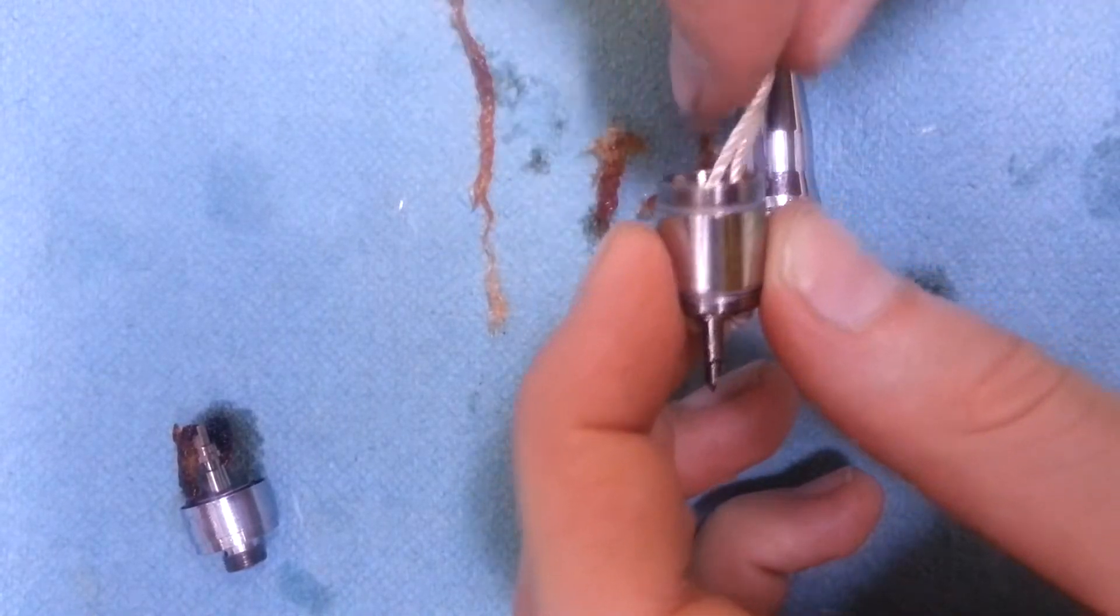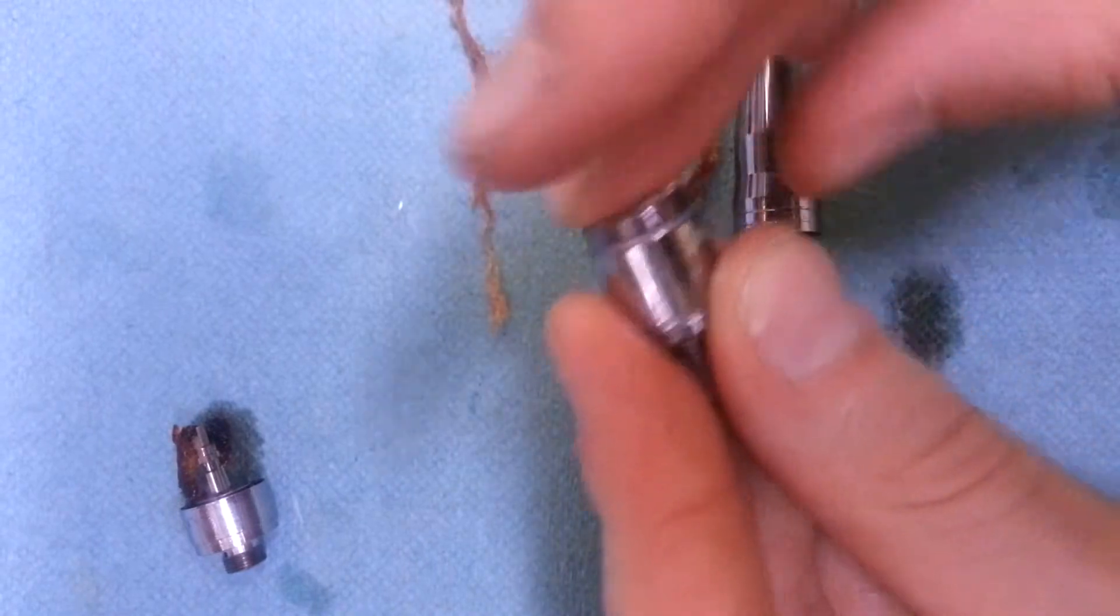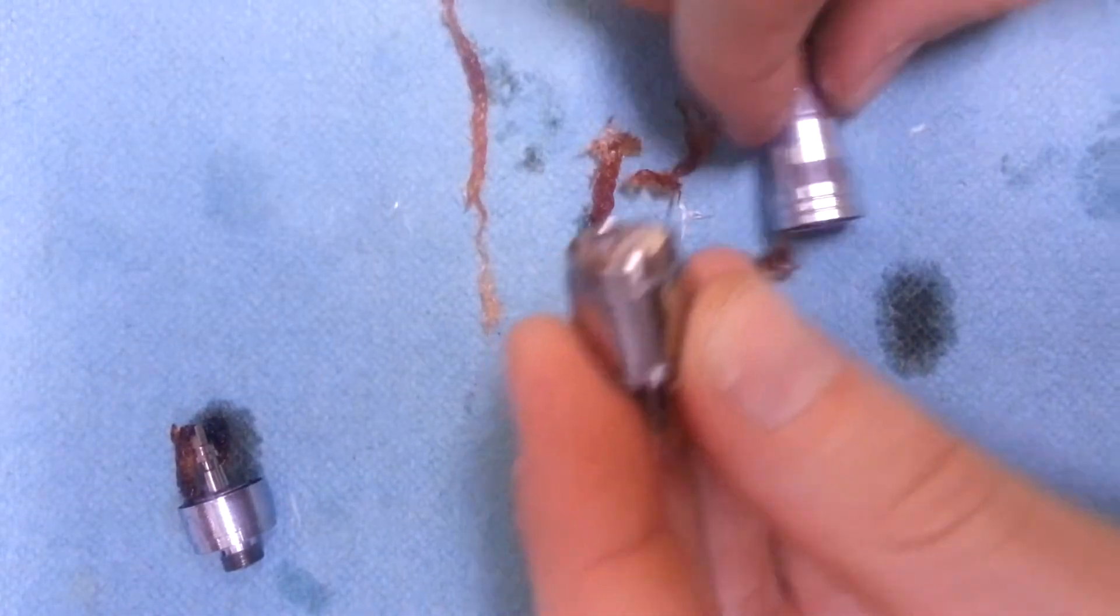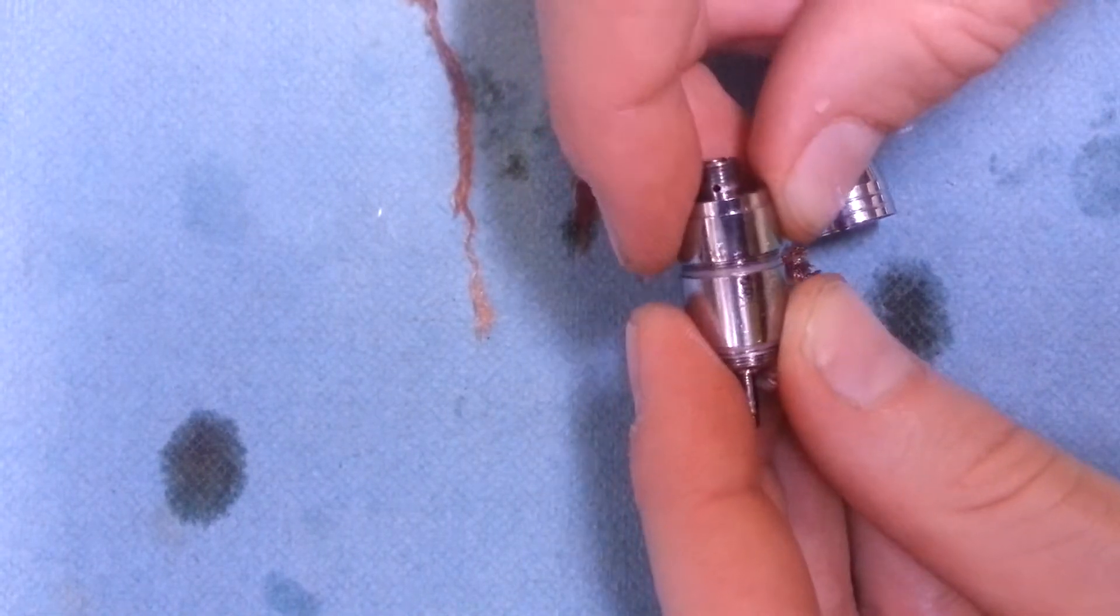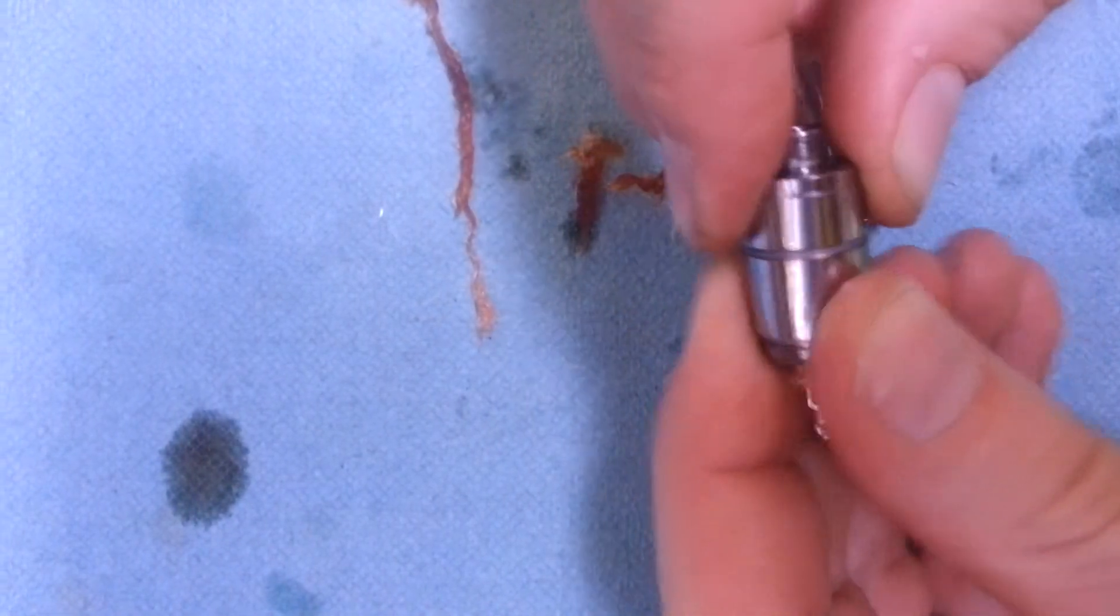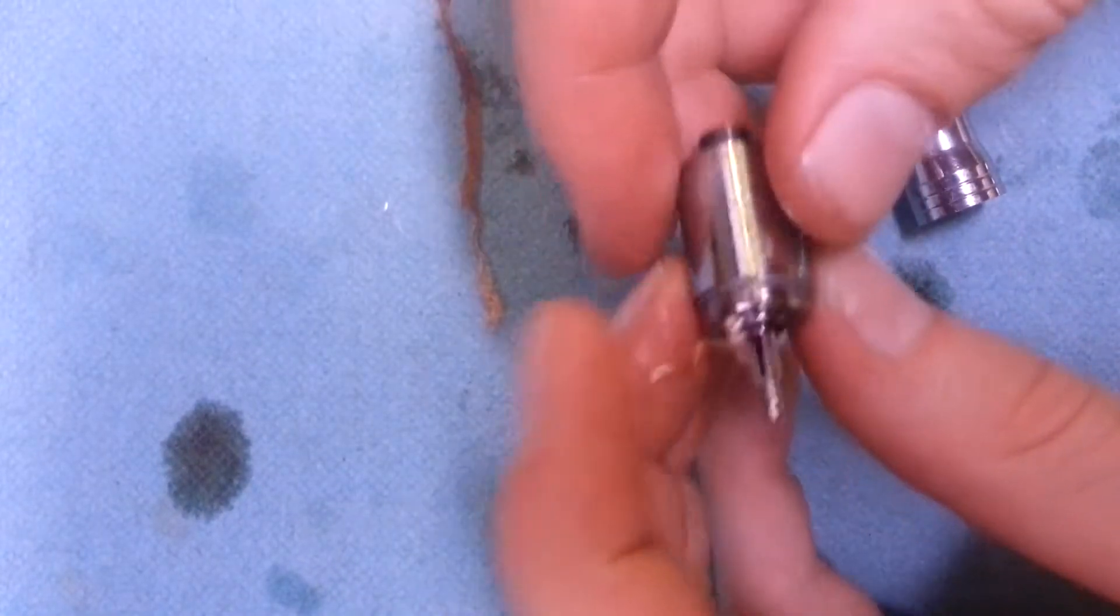And then just take the remaining stuff and just kind of bunch it up in there like that. Take my base, return it to the little wicking chamber. And I got juice everywhere. And then you're ready to go.